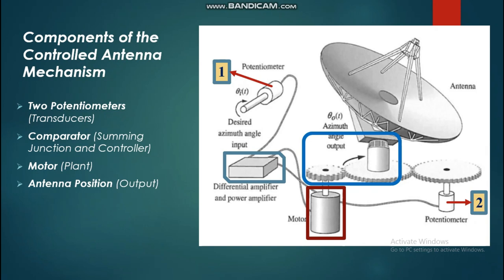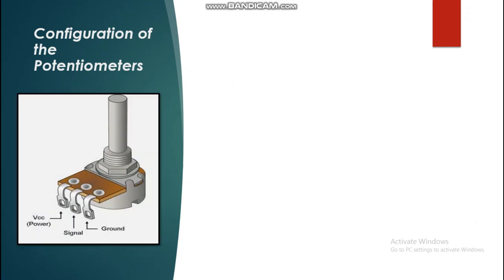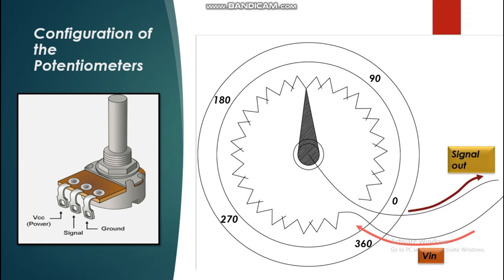Our final output is the rotation of the antenna to our desired position. Now let's look at the potentiometer configuration. There are three major connections: the left terminal is the input power, the middle is the output signal, and the right is grounded. It is essentially a simple variable resistor configured from 0 to 360 degrees. The input signal is the potential difference from the left terminal, and the output signal is taken from the middle terminal, which is sent to the summing junction as a positive value.